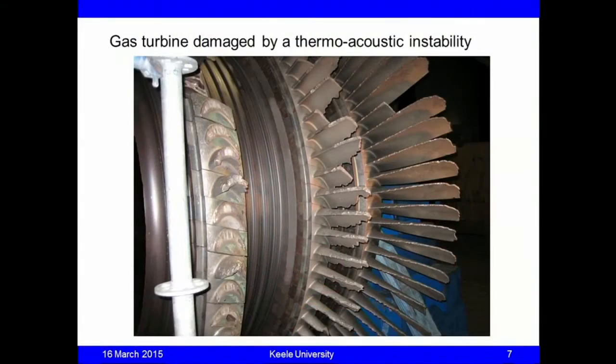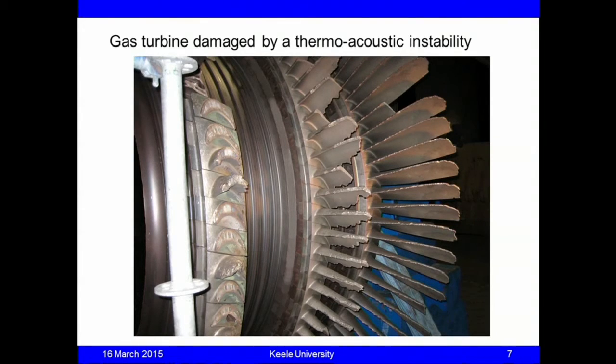I want to show a picture of the kind of damage you can get. This is the turbine of a gas turbine engine; upstream on the left was a combustion chamber that suffered a thermo-acoustic instability. Some structural bits of the liner came loose, got swept downstream into the turbine, and this is the damage that was caused: an entire row of turbine blades was shaved off, and the subsequent two rows were badly damaged.